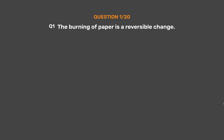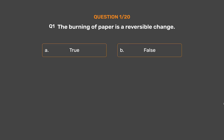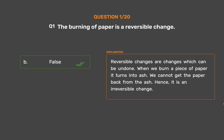Question number 1: The burning of paper is a reversible change. Option A: True. Option B: False. The correct answer is Option B, False. Reversible changes are changes which can be undone. When we burn a piece of paper it turns into ash. We cannot get the paper back from the ash. Hence, it is an irreversible change.